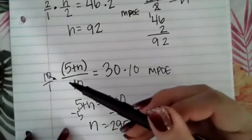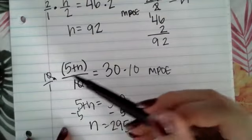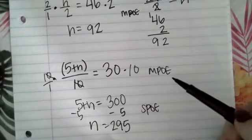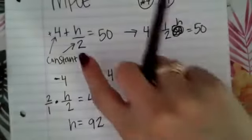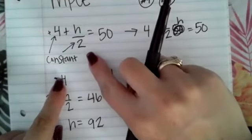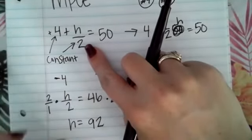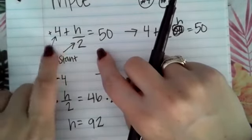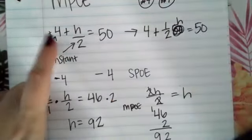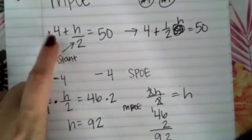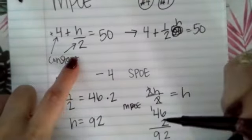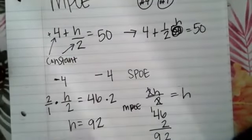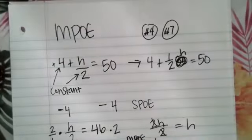So if it is being divided by the entire group of something, you'll start off your problem using the multiplication property of equality. If it is just one term that's being divided by something, you will get rid of the other constants first by using addition, subtraction, whatever kind of operation you need. And then you'll use the multiplication property of equality to solve. This should be able to help you with number 4 and number 7 on your 2.4 homework.